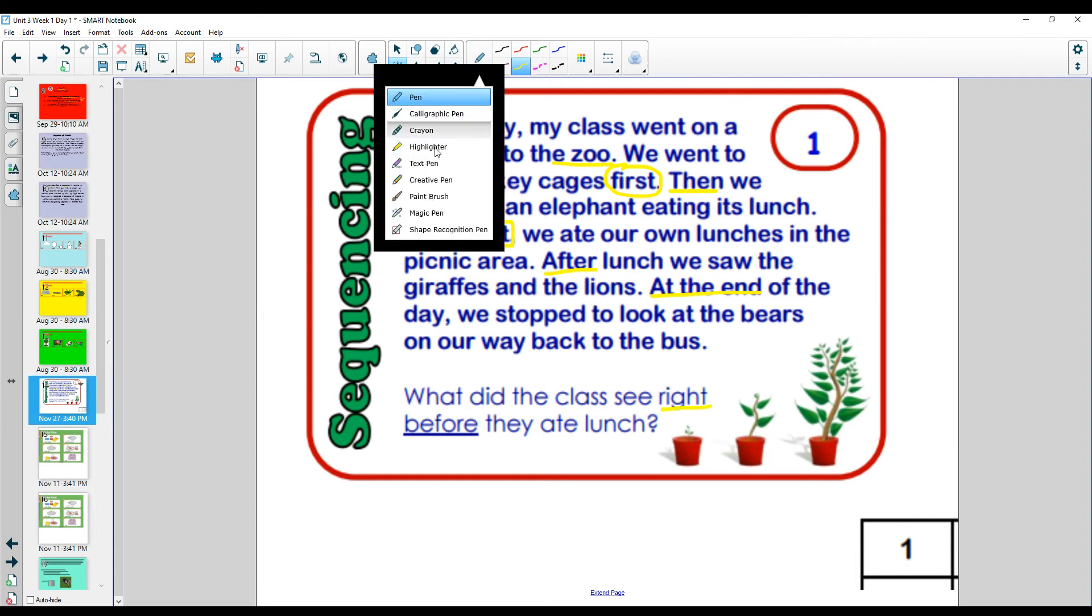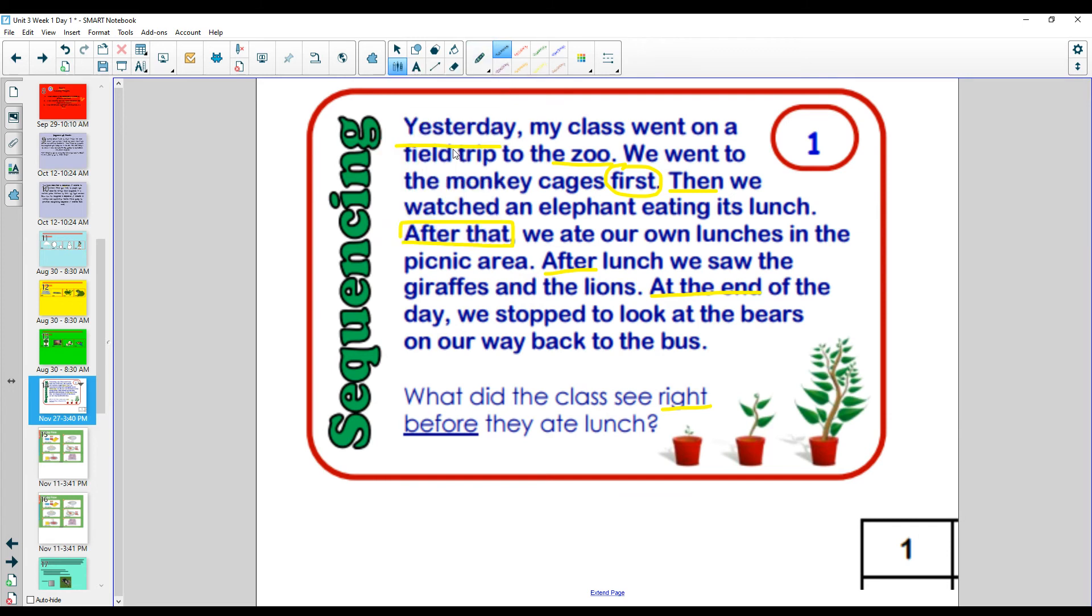Well, first, what I'm going to do is get my highlighter. I'm going to find what they did for lunch. It says, what did the class see right before they ate lunch? Alright, here is where it says we ate our own lunches. I'm going to look before that. What did they do before that? Well, before that, they watched an elephant eating its lunch. We find the clues in the text and go to our answer.